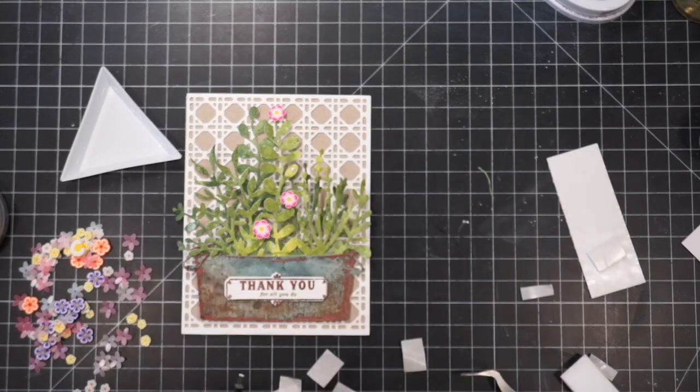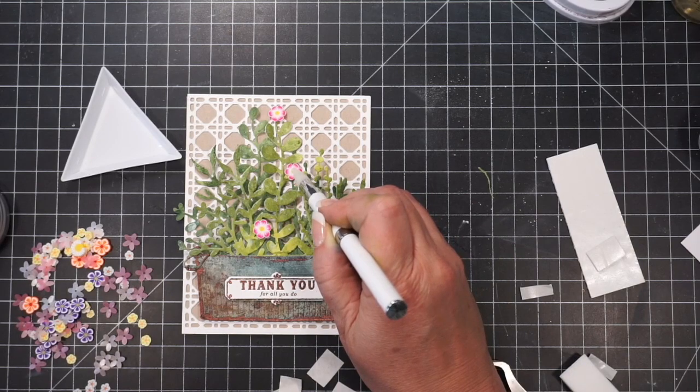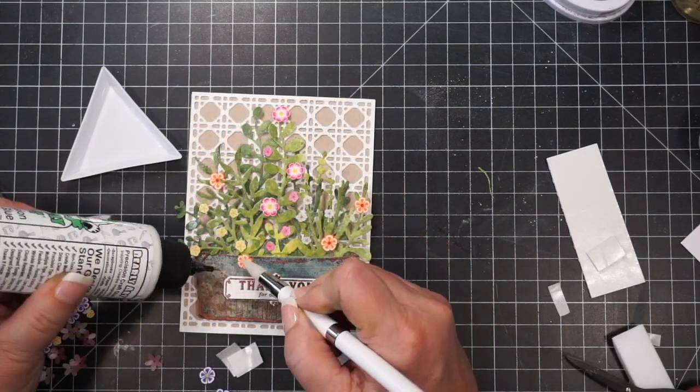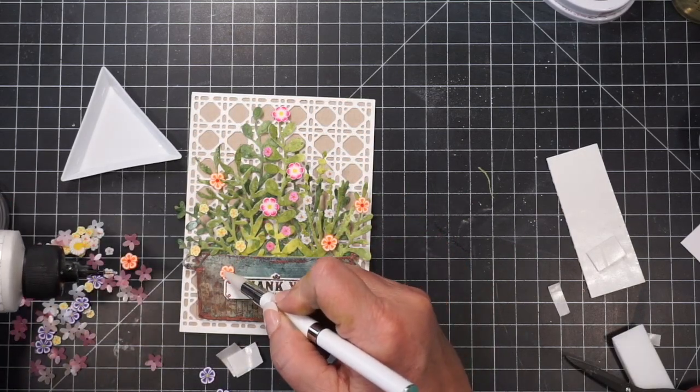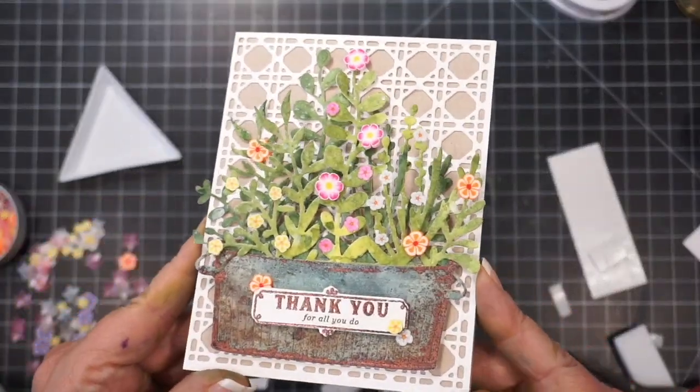Curl up the little edges of your foliage to give it even more movement. And I don't adhere everything, I just add little drops here and there. I pop the sentiment up with a little bit of foam tape in the middle of the tub. Adhere some flowers in different colors using the pinks, the oranges, yellows, the little white bits. How cute is that tub and filler die paired with the woven cane background?